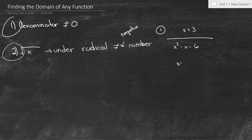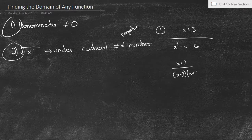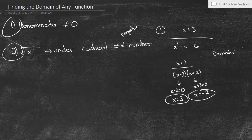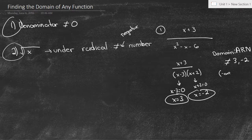So we've got x plus 3 on top. Now I'm going to factor the denominator: I get x minus 3 times x plus 2. Setting each factor equal to zero: x minus 3 equals zero gives x equals 3; x plus 2 equals zero gives x equals negative 2. So the domain is all real numbers not equal to 3 and negative 2. In interval notation: negative infinity to negative 2, union negative 2 to 3, union 3 to infinity.